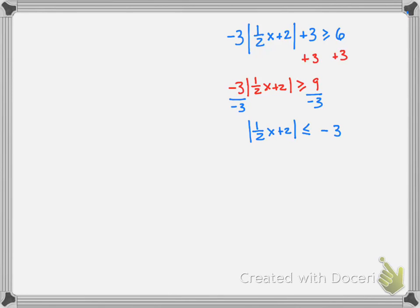And so what that means is we have that same absolute value, 1 half x plus 2 less than or equal to negative 3, greater than or equal to the opposite of that, which is 3.